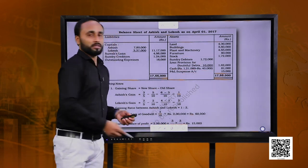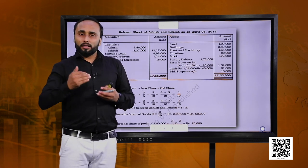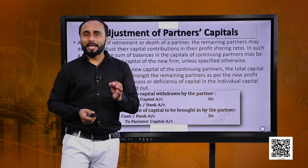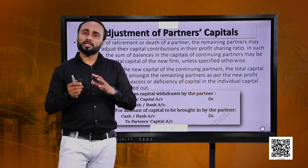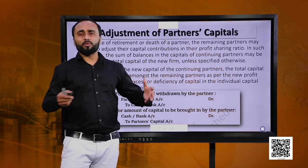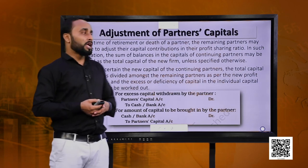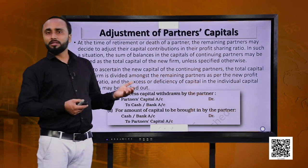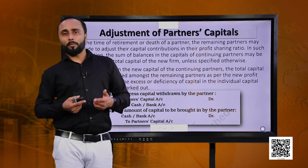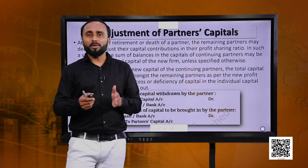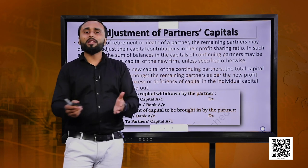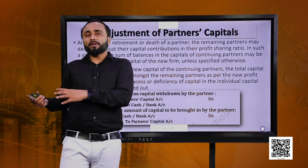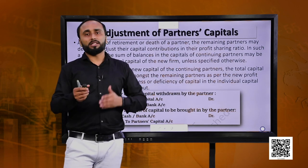I hope you were able to understand this. Now we will go a step further. Sometimes the remaining partners decide to change their capitals — they do not want to keep their capitals in their previous ratios or relationships. They want to change their own relationship and make adjustment to their capitals. This is called adjustment of partners' capital account. This might happen when partners want to change the relationship between them since the entire partnership firm is getting reconstituted.